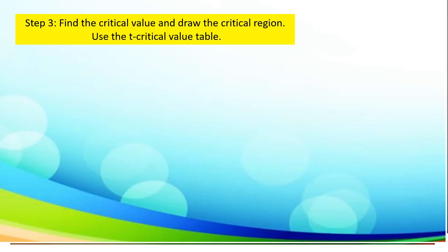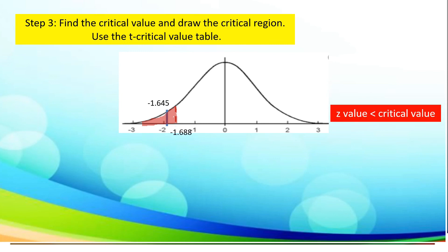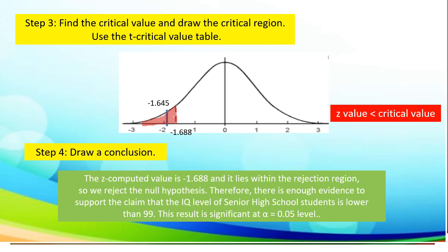Using step 3, let us find the critical value and draw the critical region. Using our standard normal curve, let us locate our critical value, which is negative 1.645, and our computed value, which is negative 1.688. Since our z-value is less than our critical value, we can conclude that the z-computed value lies within the rejection region, and we reject the null hypothesis. Therefore, there is enough evidence to support the claim that the IQ level of senior high school students is lower than 99. This result is significant at the 0.05 level of significance.